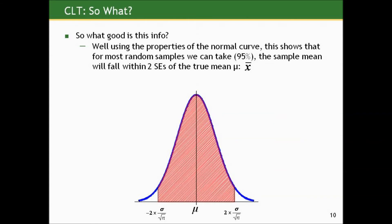So what good is this info? Well, let's bring in some properties of the normal curve. If this curve tells us that had we taken every possible random sample of size n and computed every possible sample mean, the distribution would be normal and centered at the truth, then using the properties of the normal curve, 95% of the random samples of size n we could take would have sample means that fall within two standard errors of the true mean mu.